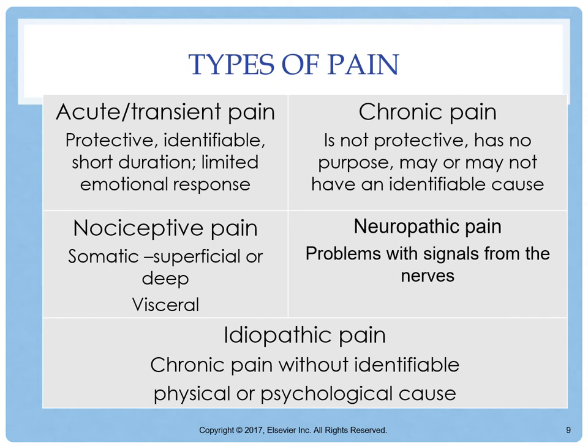Chronic pain lasts longer than expected, usually at least six months. It does not always have an identifiable cause, and unrelieved acute pain can progress to chronic pain. Examples of chronic pain include arthritis, headaches or migraines, peripheral neuropathy, and back pain. The unknown cause of chronic pain frequently leads to psychological depression and even suicide. Symptoms include fatigue, insomnia, anorexia, weight loss, hopelessness, and depression. Patients with chronic pain should receive pain medication around the clock, not PRN.